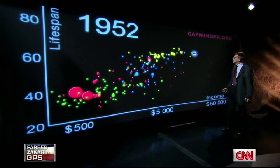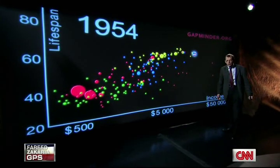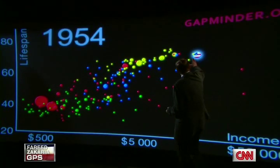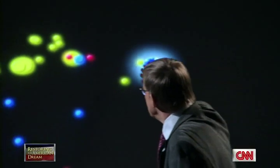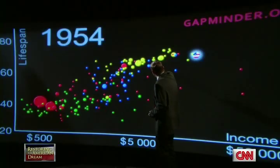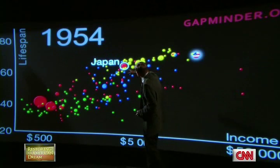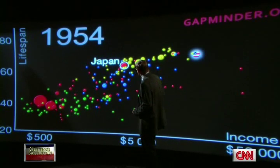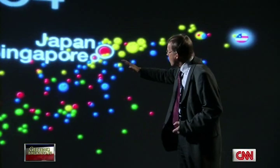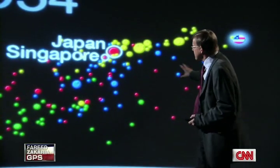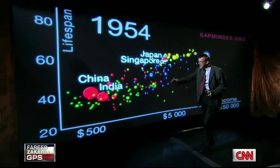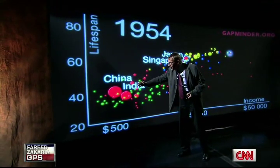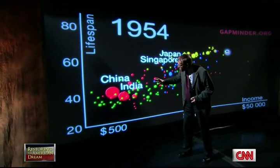We stop here at 1954, at the end of the Korean War. At this time, United States was on top, Europe had fallen behind, and Japan was trying to catch up. Interestingly, a small country on the equator — Singapore — was just behind. Latin America was in between, and China and India were still down here, with low life expectancy and low incomes.